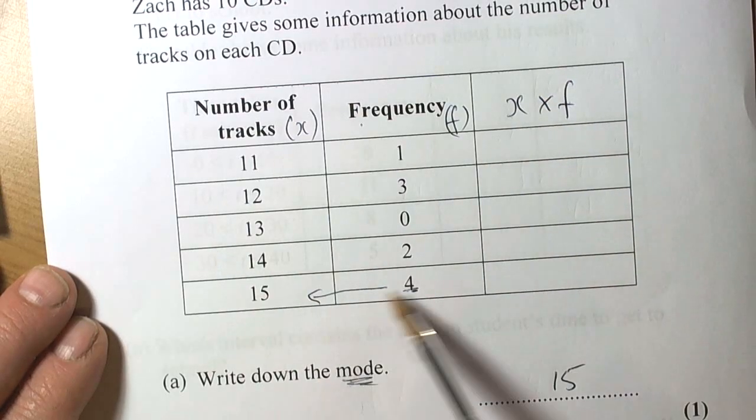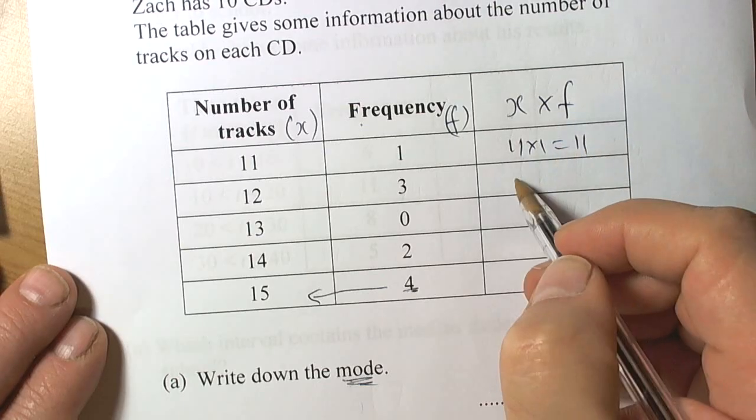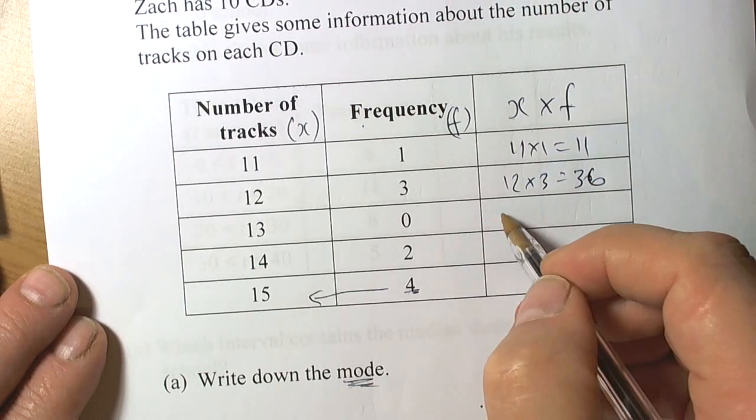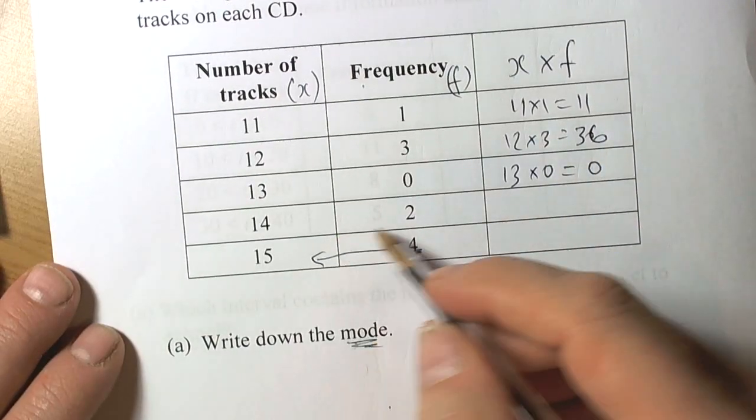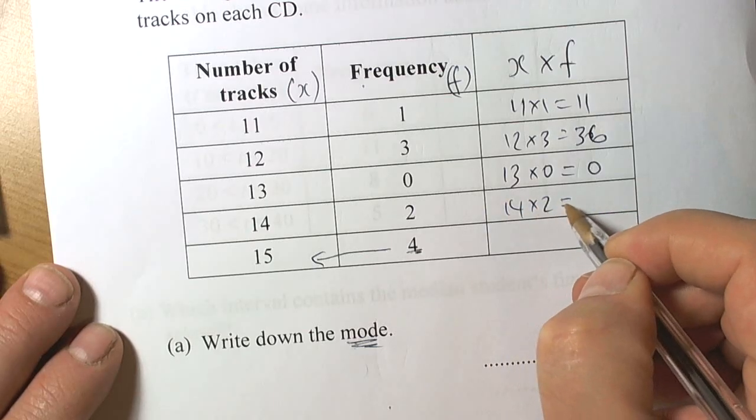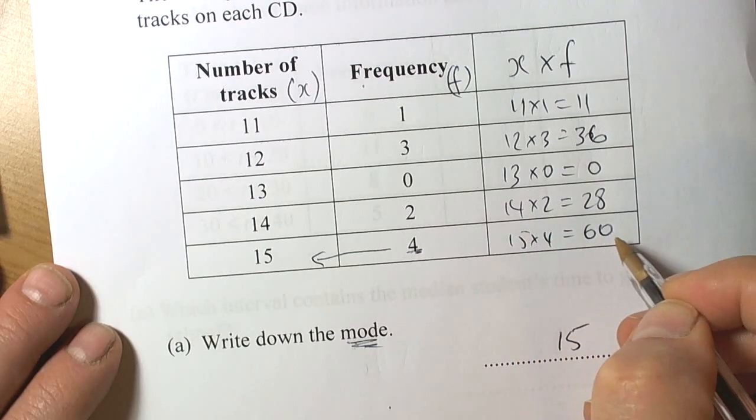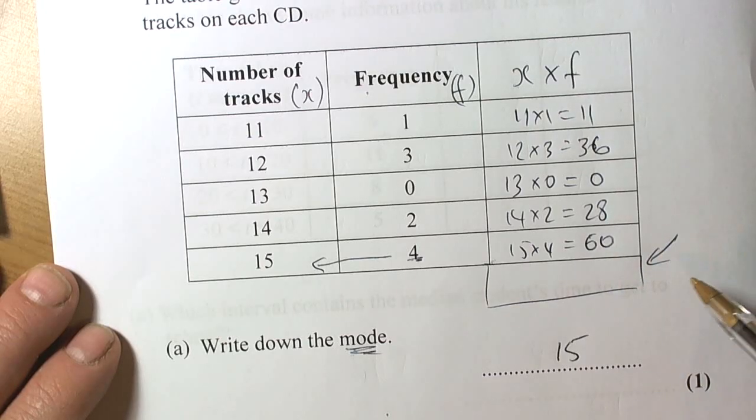We've got 11 times 1 is 11, 12 times 3 is 36, 13 times 0 - be careful here - is 0, 14 times 2 is 28, and 15 times 4 is 60. This allows us to add up and work out how many tracks there are altogether on all the CDs.